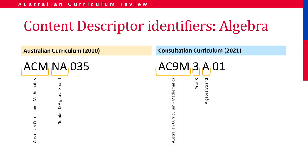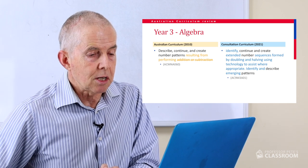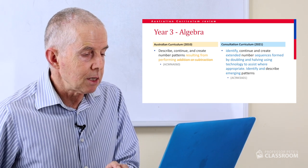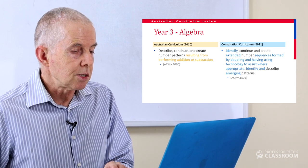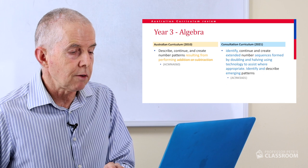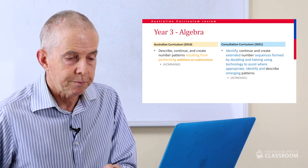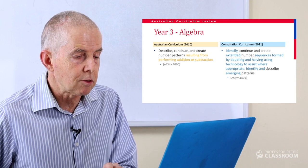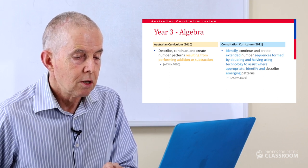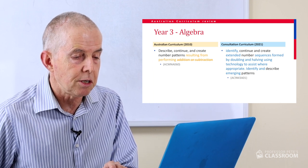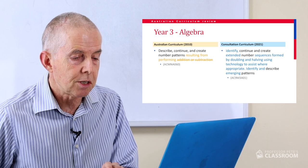Moving on to algebra — these codes start with 3A. The first one has a lot of changes and expansion of language. The old curriculum had describe, continue and create number patterns resulting from performing addition and subtraction. The new one has identify, continue and create extended number sequences formed by doubling and halving, using technology to assist where appropriate. Identify and describe emerging patterns. I like the expansion of the language, but I'm bothered by the fact that it's been specified as only doubling and halving.